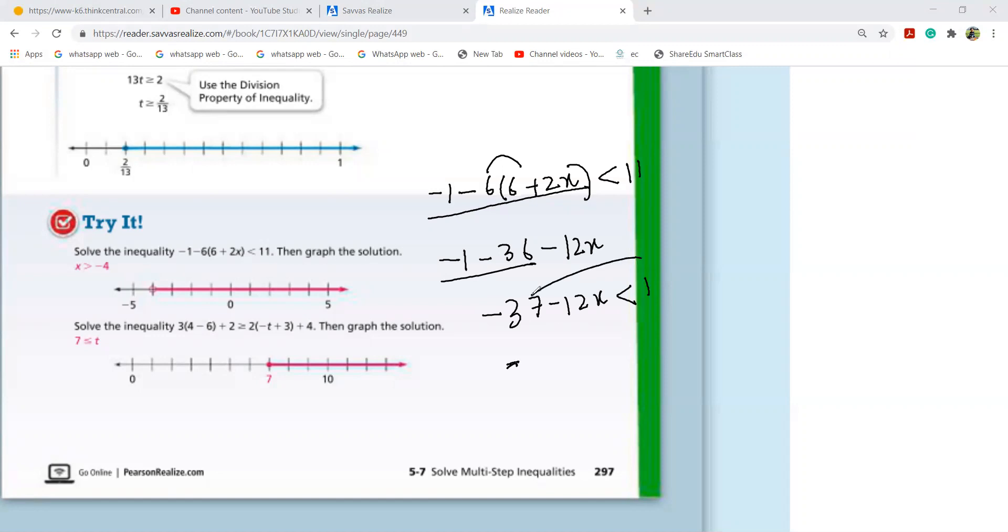So, minus 37 goes to other side. Minus 12X remains. And it is plus 37. 11 plus 37. Minus 12X. What is 11 plus 37? It's 48. So, X will be 48 over minus 12. Girls, when minus sign goes to the other side, what happened to the... This changes.